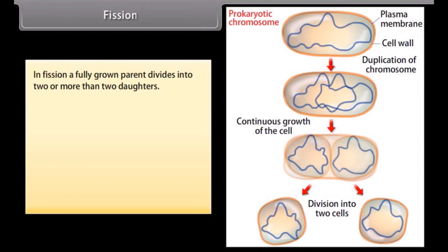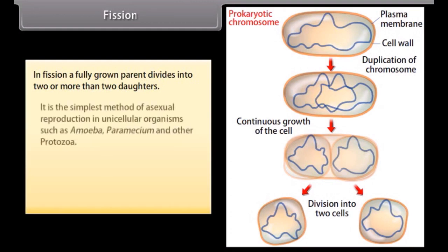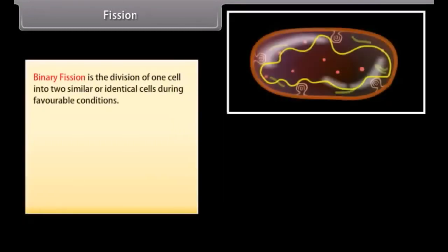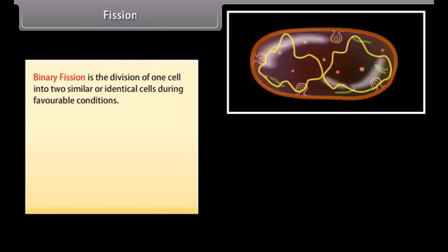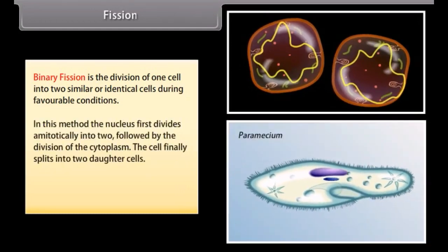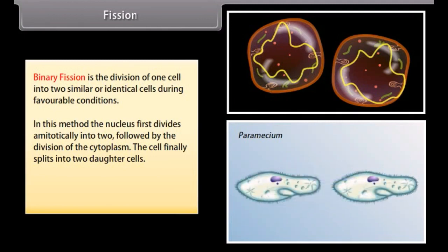Fission. In fission, a fully grown parent divides into two or more daughter cells. It is the simplest method of asexual reproduction, found in unicellular organisms such as amoeba, paramecium, and other protozoa. Fission is of two types: binary fission and multiple fission. Binary fission is the division of one cell into two similar or identical cells during favorable conditions. The nucleus first divides amitotically into two, followed by the division of cytoplasm, and the cell finally splits into two daughter cells. Examples include bacteria, yeast, Euglena, amoeba, and paramecium.